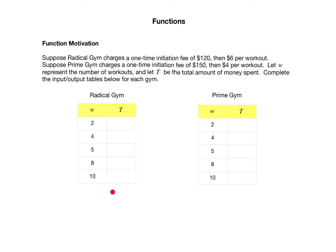Let's first focus on Radical Gym. Suppose someone has worked out two times — how much money have they spent in total? At Radical Gym, it costs $120 just to join and then $6 per workout. So if they worked out twice, they'd have to pay $6 twice plus the $120 initiation fee, giving us $132.